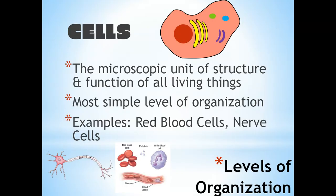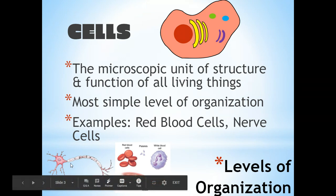So a cell — we know what this is. It's the microscopic unit of structure and function of all living things. All living things are made of cells. An example would be a nerve cell right here, or a blood cell, or a white blood cell. There are lots of different examples of cells.